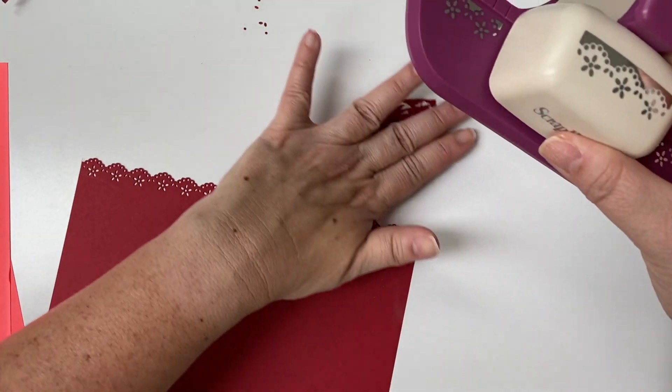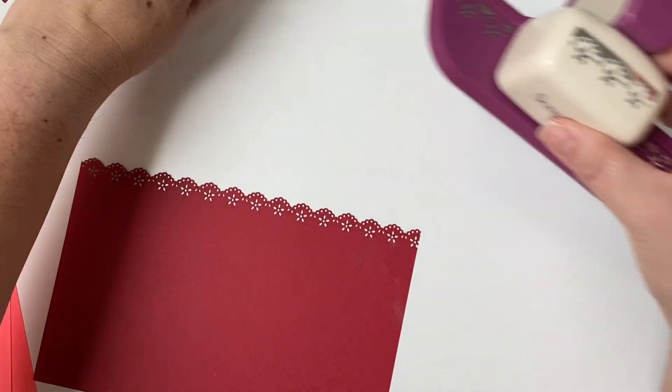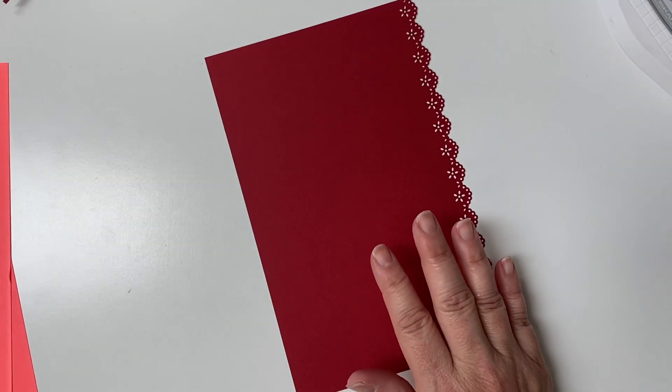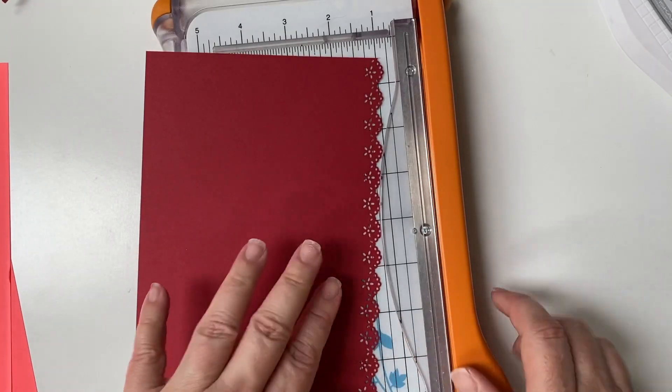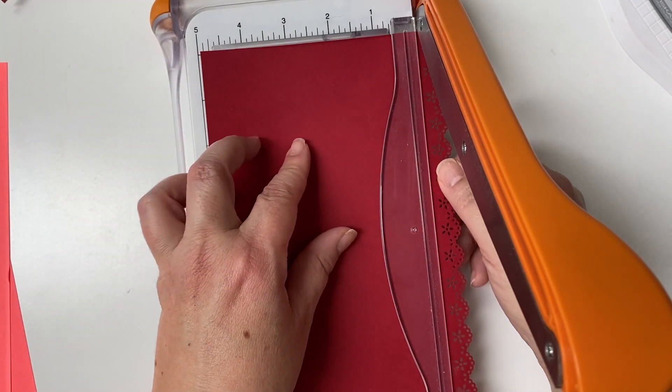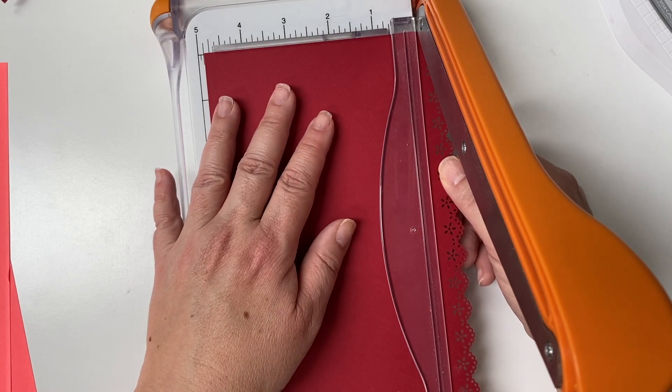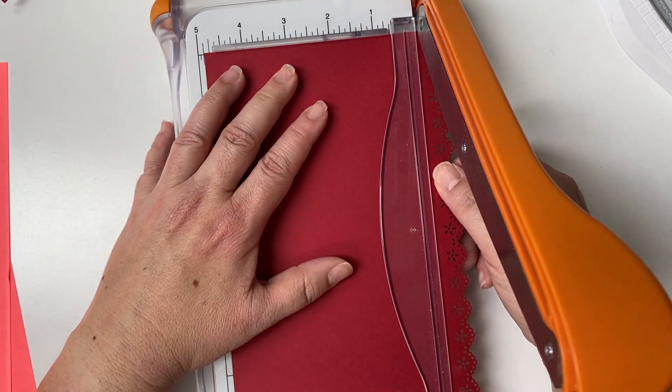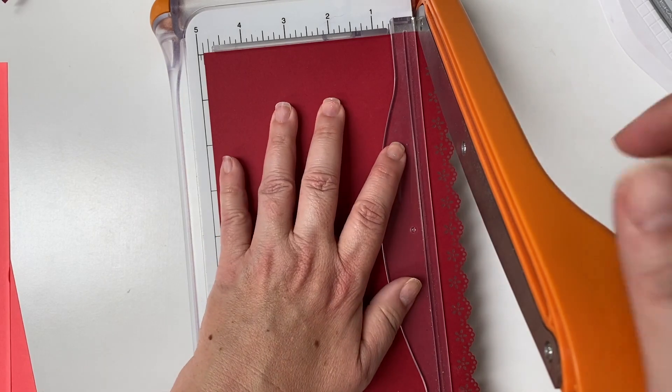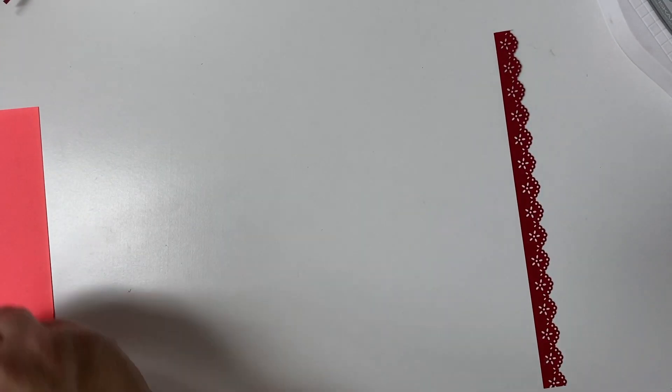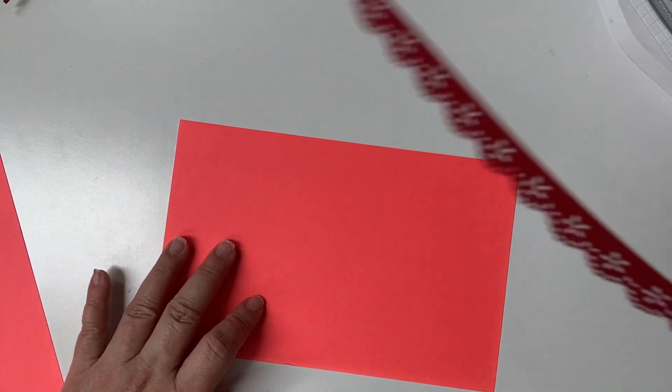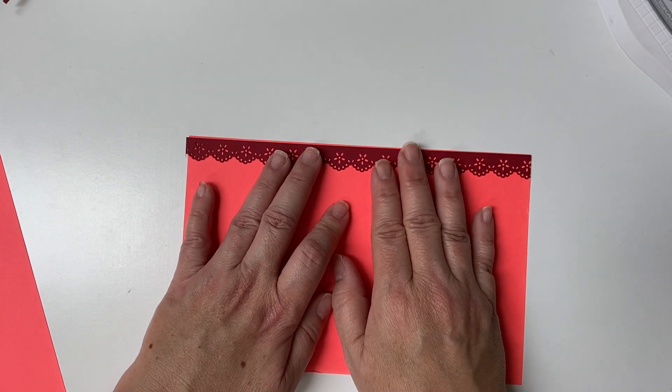And then the last one will go here. There we go. Okay, and lots of little things to go in the trash. Now what I would do with this now is I would take my paper trimmer and trim off this edge like so.